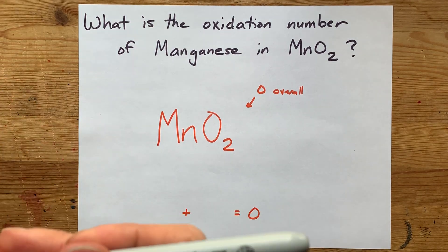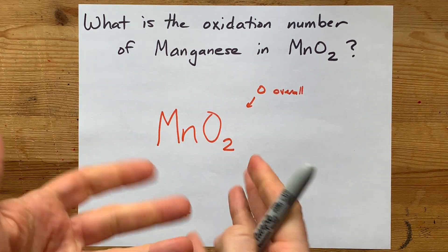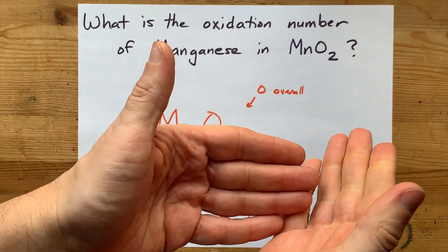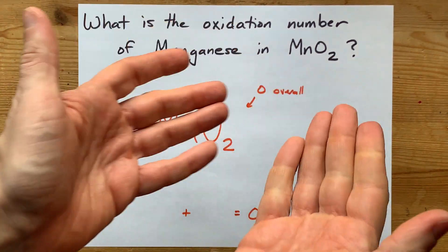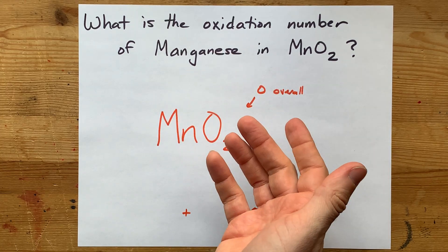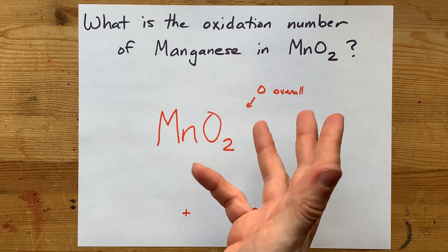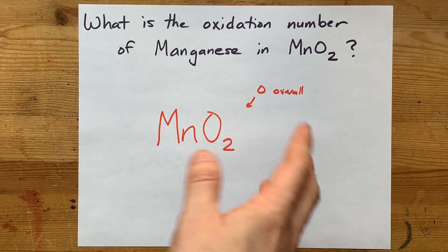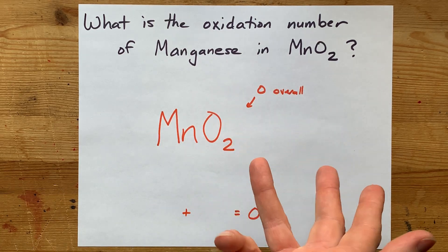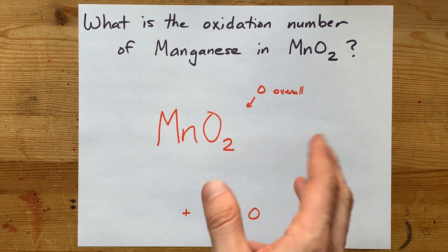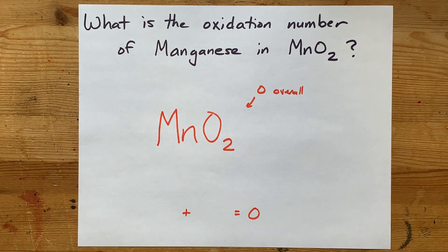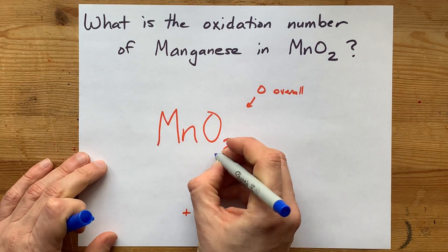You'll have to know what the rules for assigning oxidation numbers are. Pure elements — which we don't have here since they're combined together — are always zero. The alkali metals like being plus one. The halogens like being minus one, but sometimes they're not. Oxygen likes being minus two each.